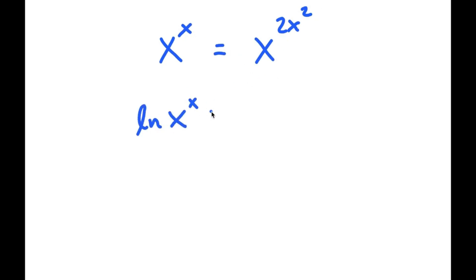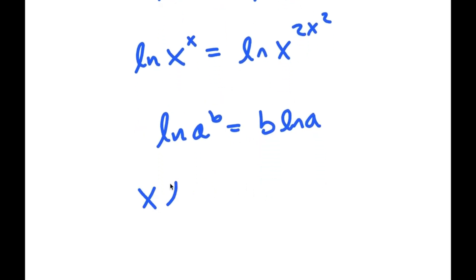And if I have something in the form ln a to the power of b, this is equal to b times ln a. So this turns out x times ln x is equal to 2x squared times ln x.